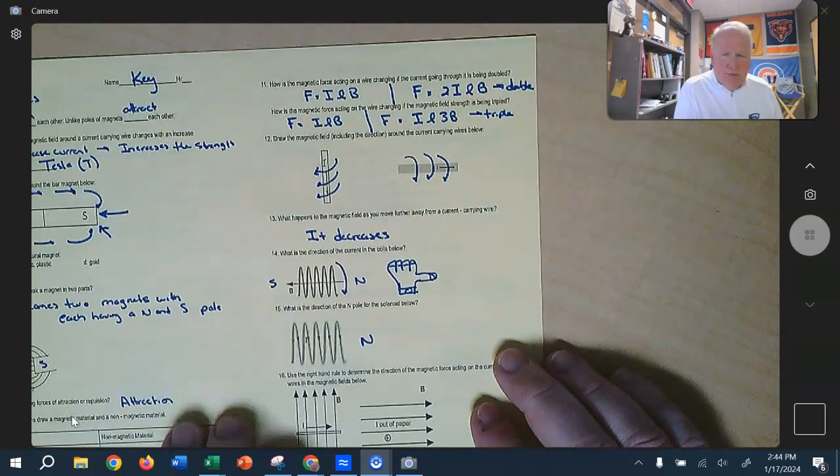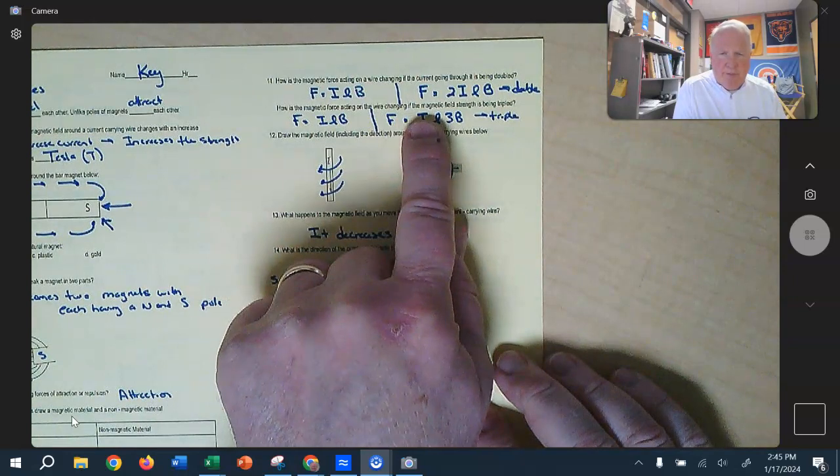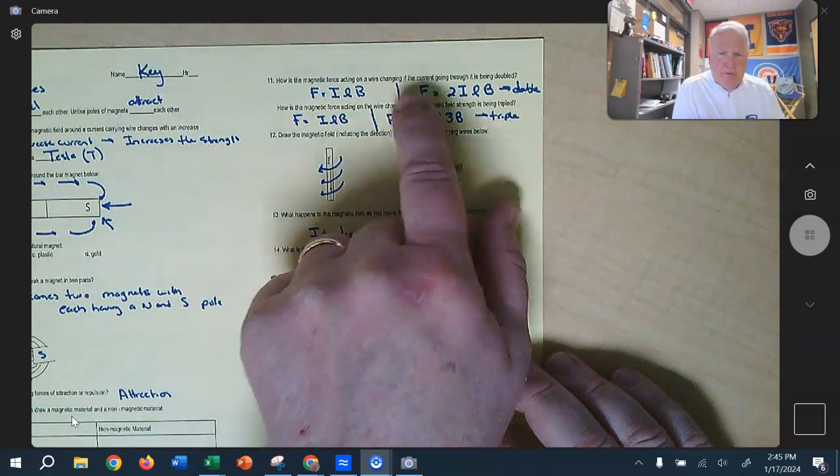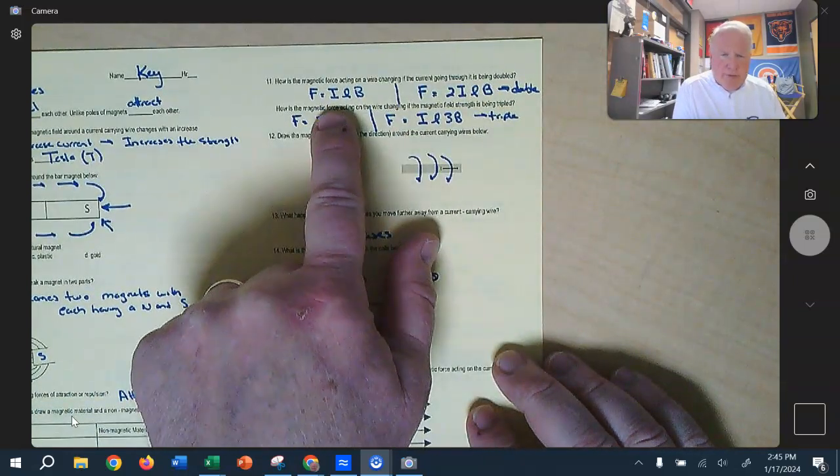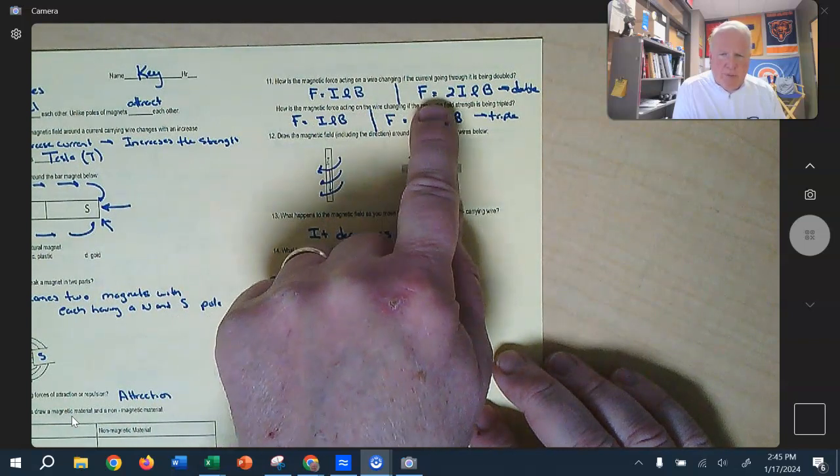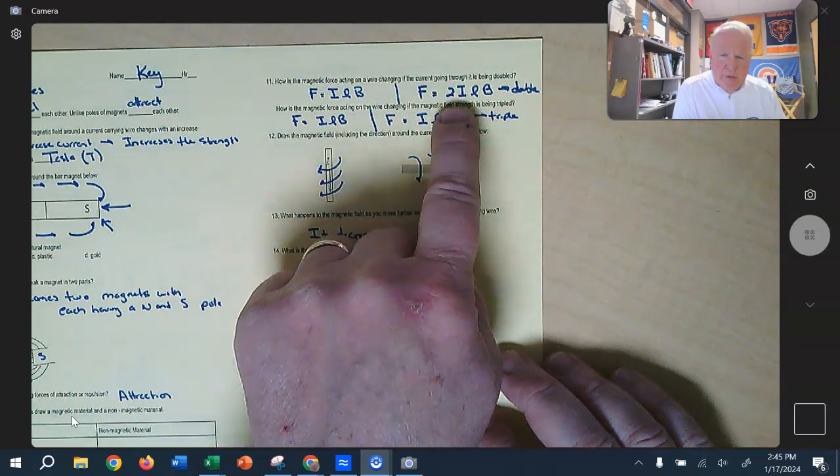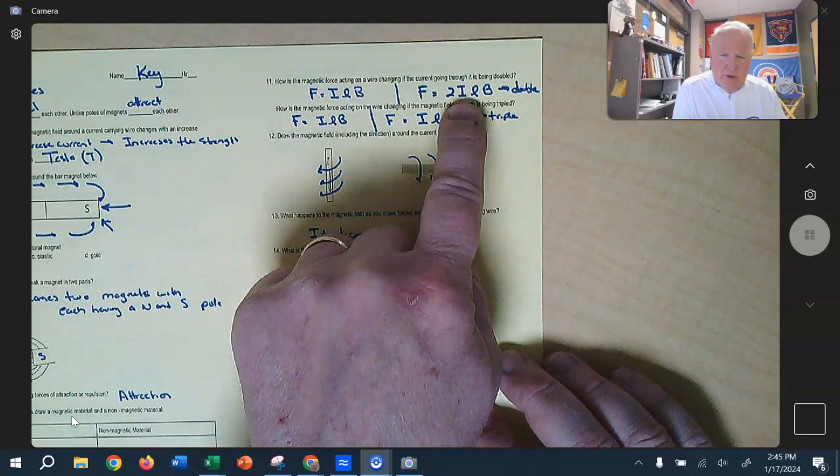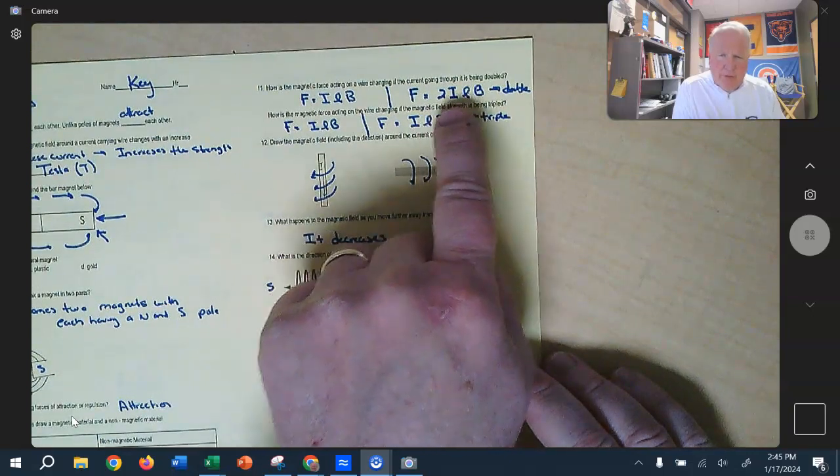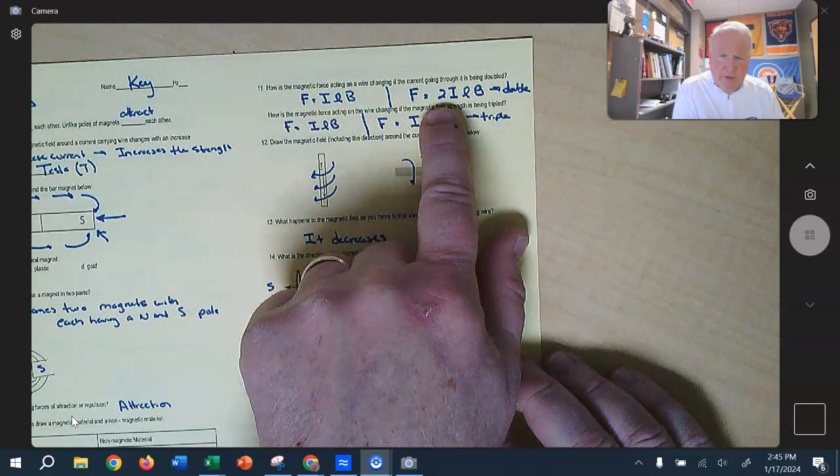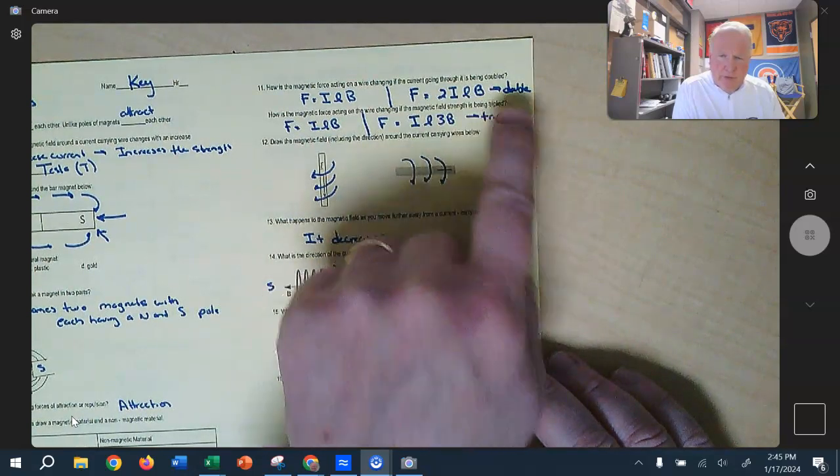These ones are the same kind of problems that we've talked about. When we say, what if we change something, so we write down the original equation, and then we write down what they did. So this one, I think, is they double the current. And so the only thing that's different between this equation and this equation is the two, so this is going to double the force.